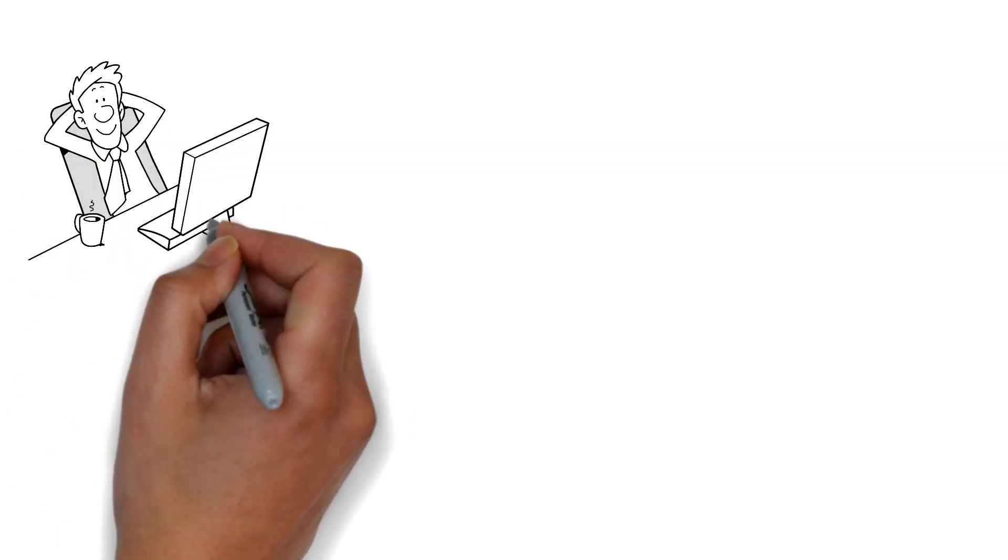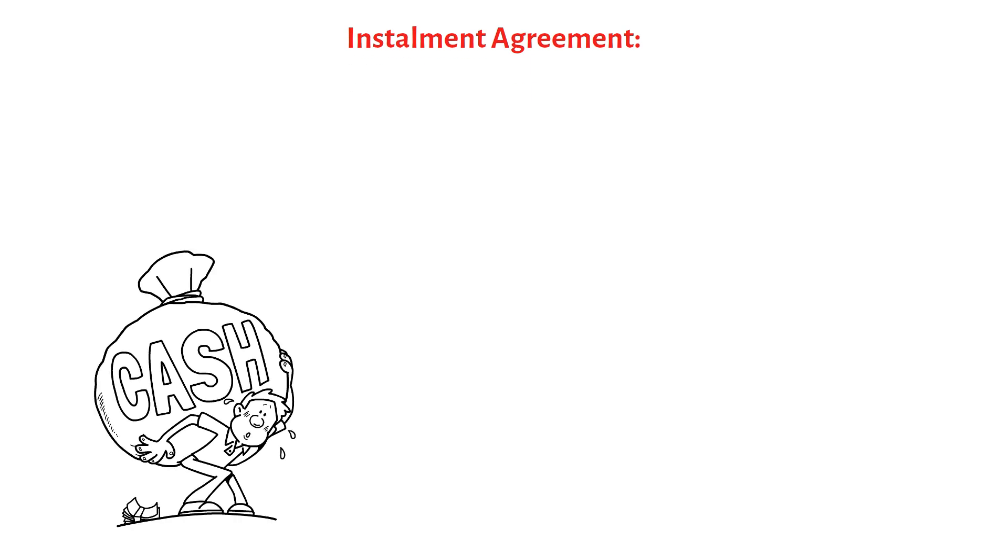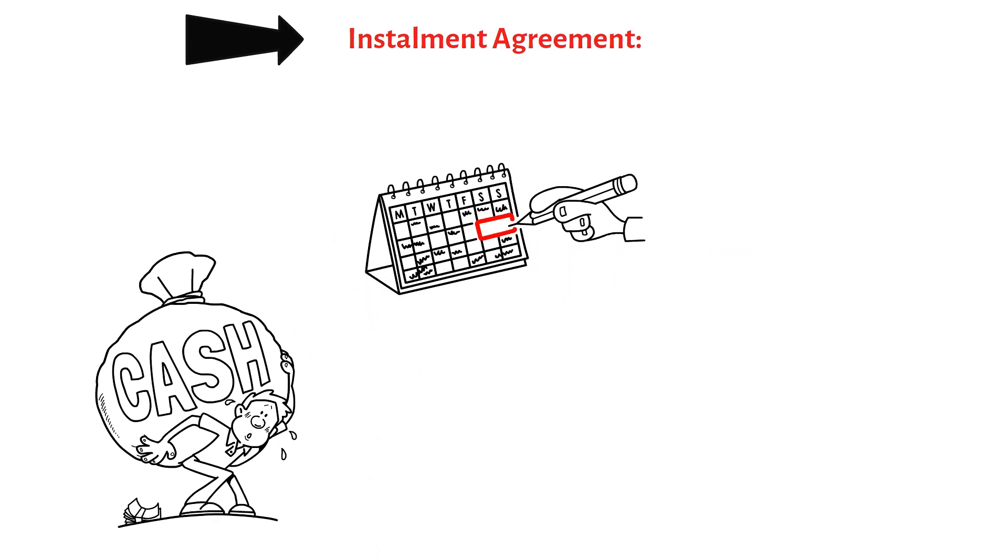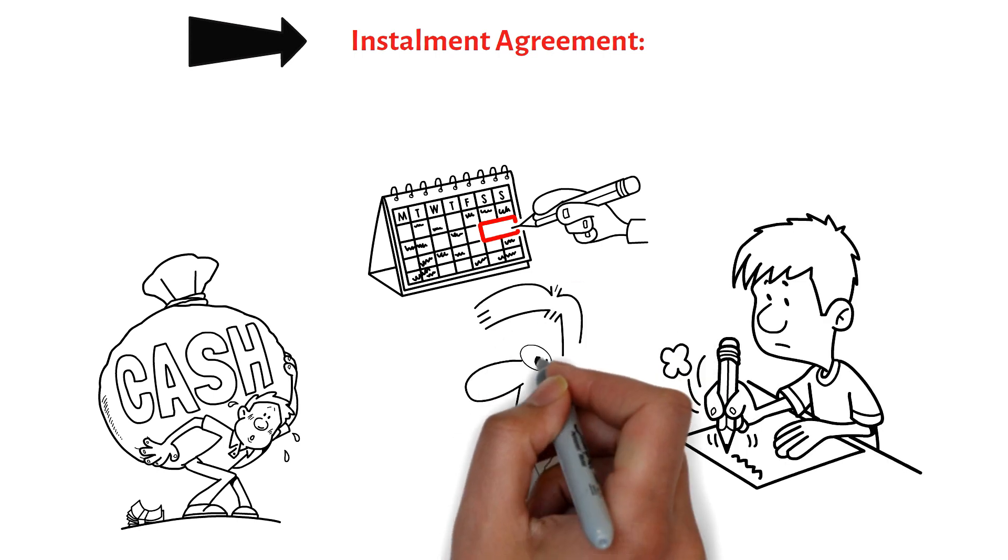Installment agreement. If paying the full amount upfront is not feasible, you can request an installment agreement. This allows you to pay off the debt in monthly installments over an extended period. Ensure you understand the associated fees and interest charges and adhere to the payment schedule to avoid defaulting on the agreement.